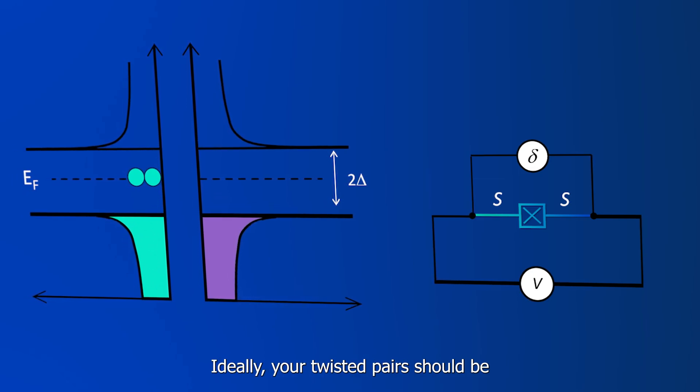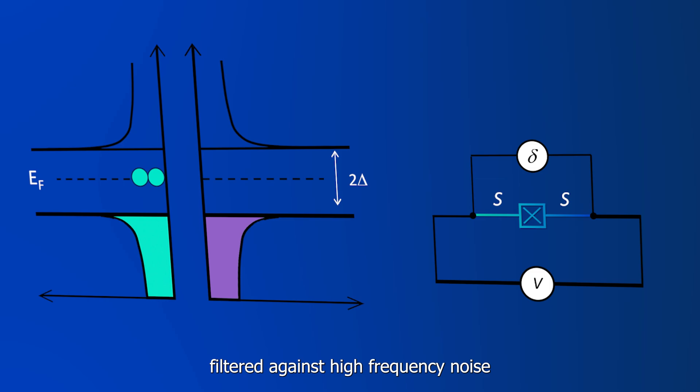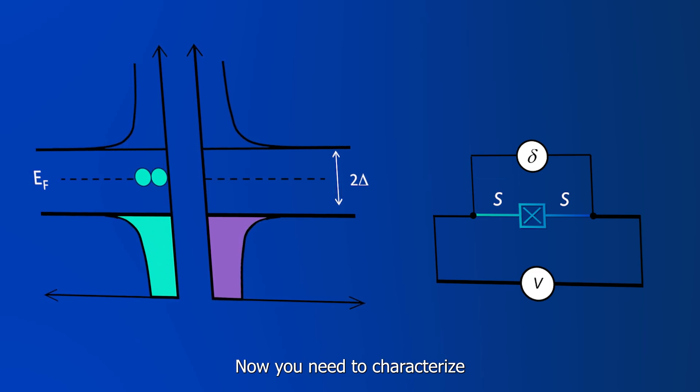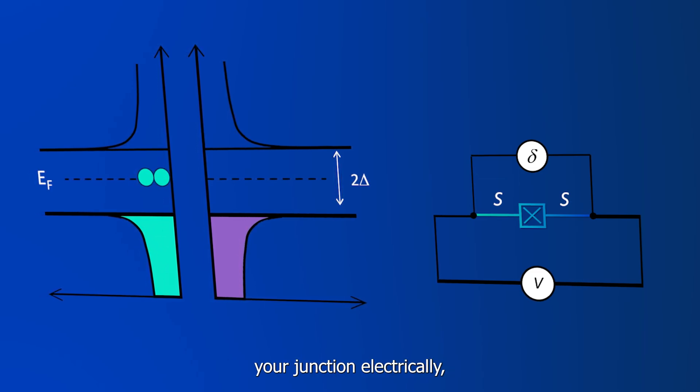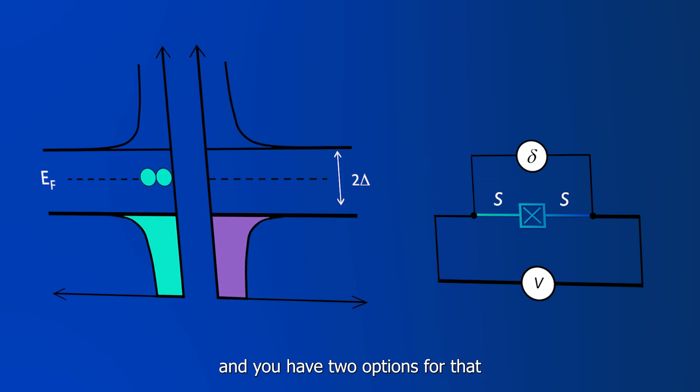Ideally, your twisted pair should be filtered against high-frequency noise. Now, you need to characterize your junction electrically, and you have two options for that.